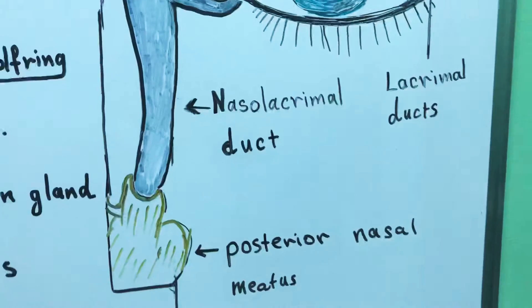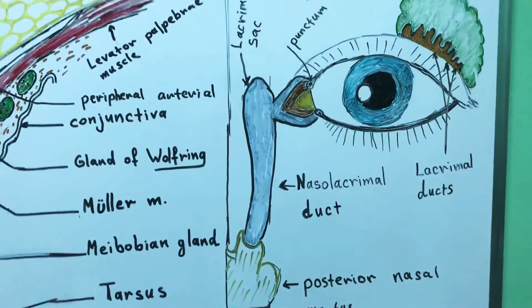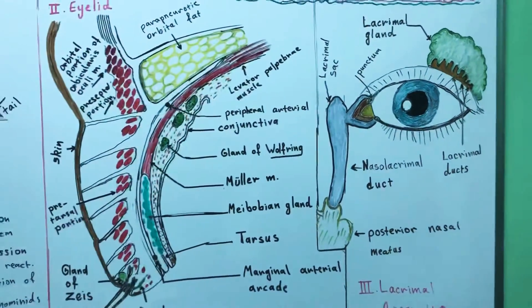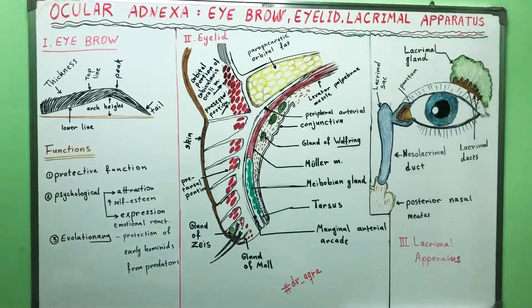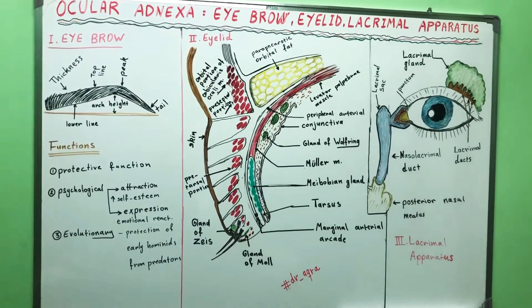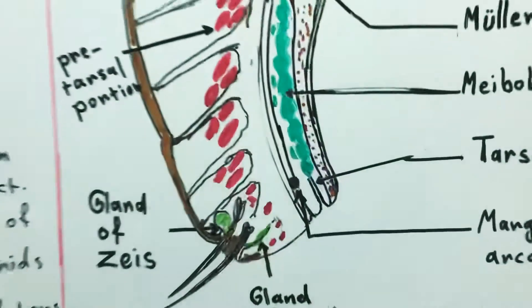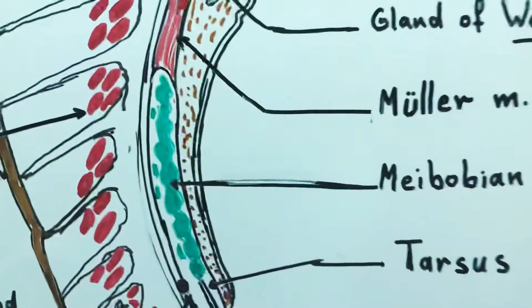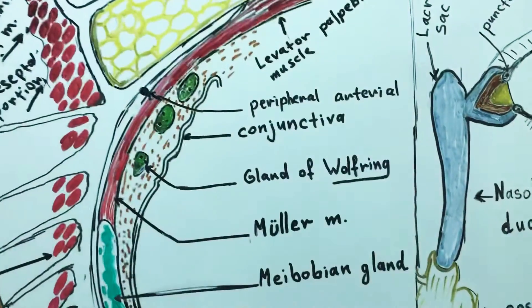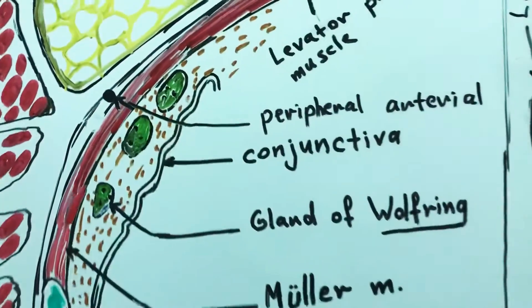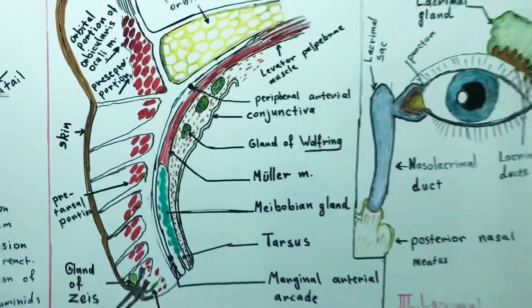The tear film is actually composed of three layers. The aqueous layer that is produced by the lacrimal apparatus. The lipid layer that is produced by the Meibomian glands of the eyelid. And the mucus layer that is produced by the goblet cells in the palpebral conjunctiva.